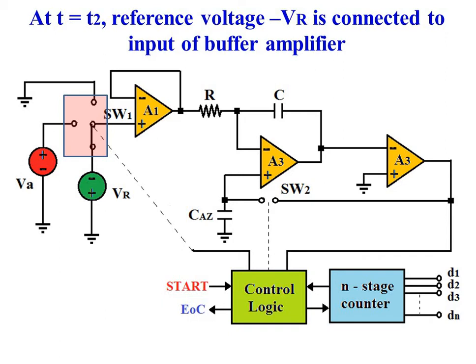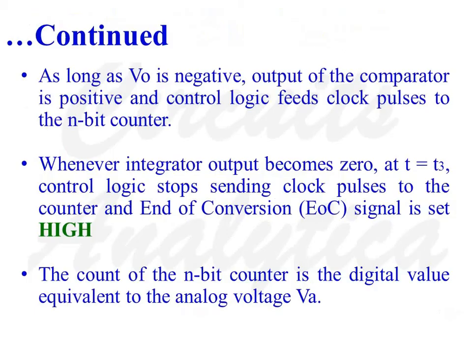So during this phase, the control logic sends clock signals to the n-stage counter and the end stage counter counts. As soon as the output of the precision integrator turns positive, the control logic senses this change and stops sending the clock signal to the n-stage counter. The control logic then sets the end of conversion signal high. The count of the n-bit counter is the digital value equivalent to the analog voltage VA.